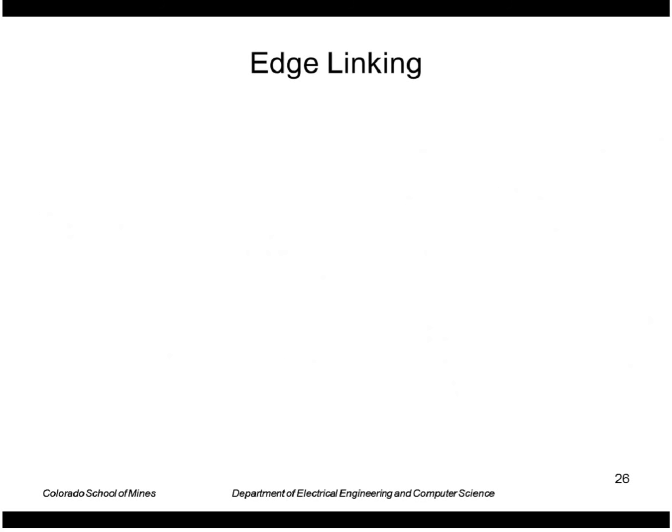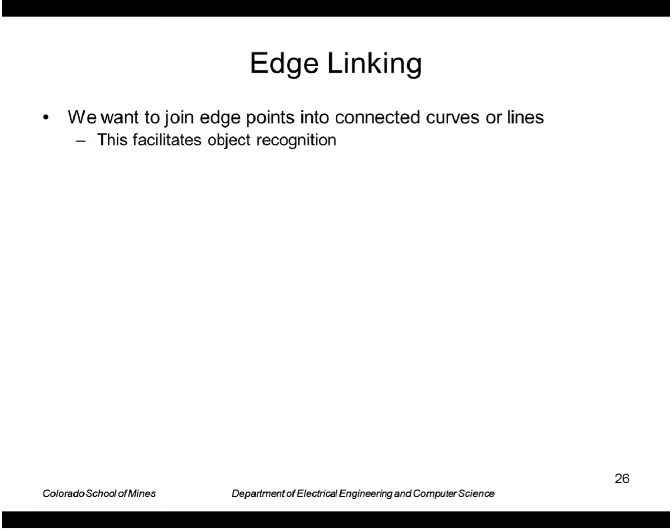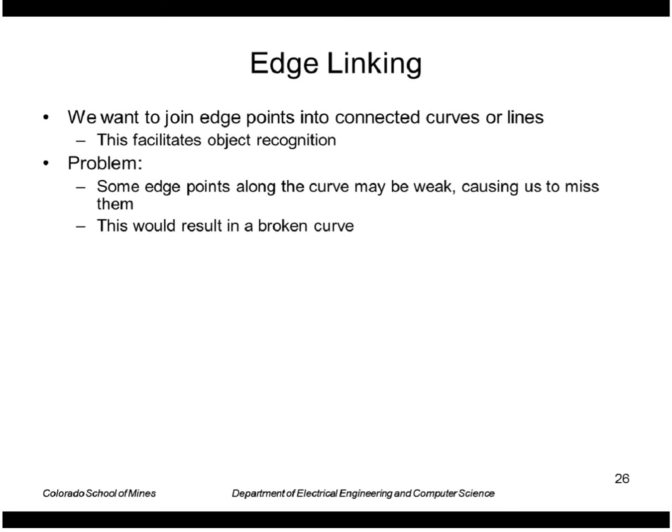One other thing done in the Canny operator is edge linking — we follow detected edge points along a curve to make a connected curve. However, the threshold may cause the curve to be broken, because the gradient magnitude of some points along the curve may be below the threshold while others are above it.